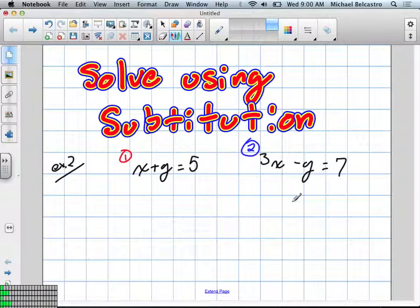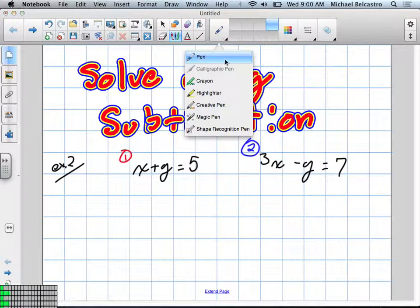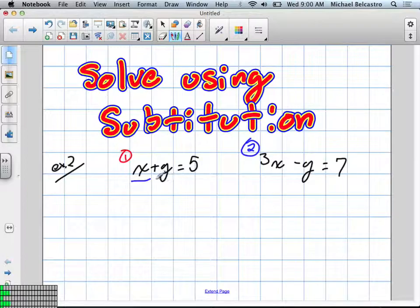What we're going to do is we're going to set either equation 1 or equation 2 equal to one of the variables. So there's two variables in each of these. And in order to solve two variables, you need at least two equations, just like what we have here.